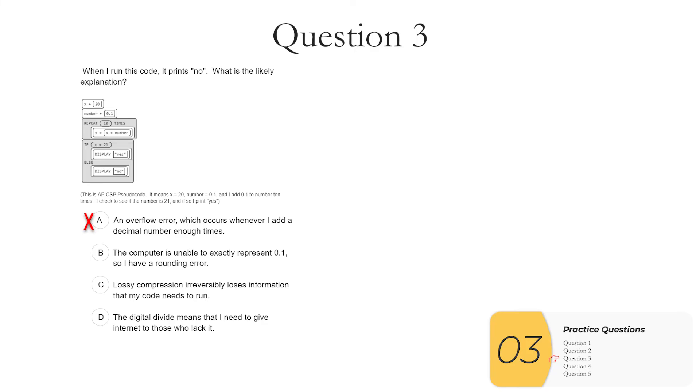B, the computer is unable to exactly represent 0.1. So I have a rounding error. And that is what's going on here. If you were to print this out, you'd see that X is equal to 21.0000003 or something like that. Something really small, but slightly different from 21. Remember, you can't compare decimals, at least not reliably, in computers when you're programming. C and D are actually both true, but they have nothing to do with this problem. So lossy compression does irreversibly lose information. And the digital divide does mean you want to give internet for those who lack it, but they're not relevant to this problem. So the answer here is B.